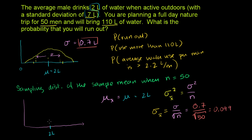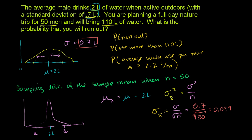So 0.099 is the standard deviation of this sampling distribution. It's going to have a lower standard deviation, so the distribution is going to be normal but much narrower. The standard deviation is almost a tenth — about 0.099 — so it's going to be a much narrower distribution, with one standard deviation away looking something like that.